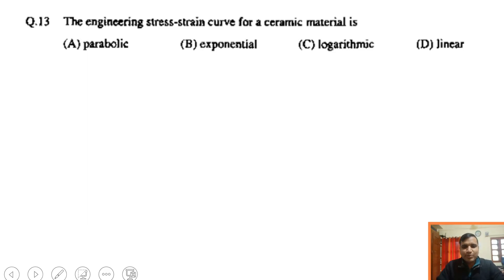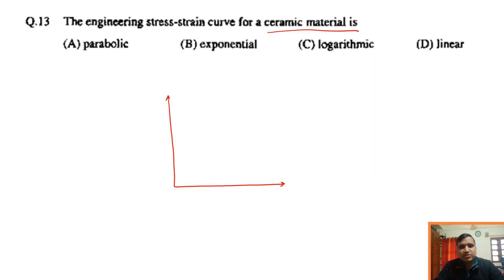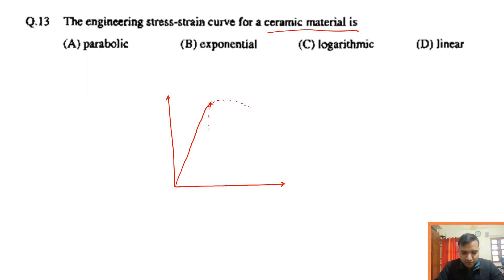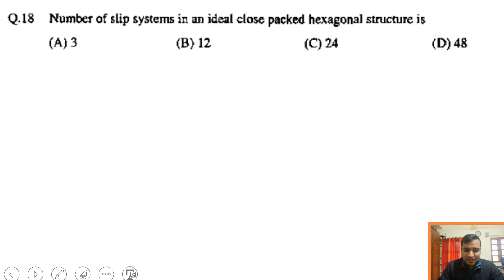Let us solve the mechanical metallurgy questions of GATE 2010. The first question asks for the engineering stress-strain curve for a ceramic material. Ceramic is a brittle material, so it has very little or no plasticity. Without plasticity, it will break without showing any plastic deformation — it behaves like an elastic material. So the curve will be only linear, not parabolic, exponential, or logarithmic.